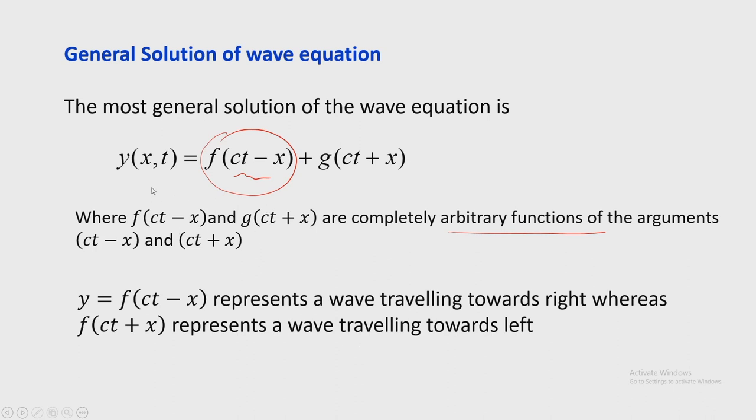The function f(Ct − x) represents a wave travelling towards the right, and G(Ct + x) represents a wave travelling towards the left. These are completely arbitrary functions of their arguments — they may be exponential, trigonometric, or any other form. This is known as D'Alembert's solution for the wave equation. In the next class, this derivation will be completed and the results interpreted with different illustrations.